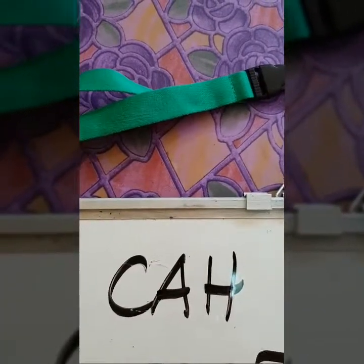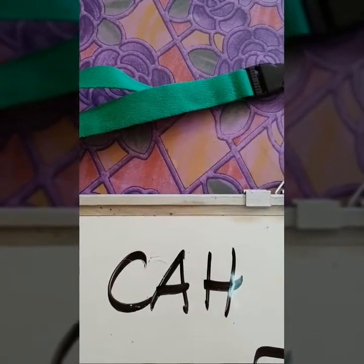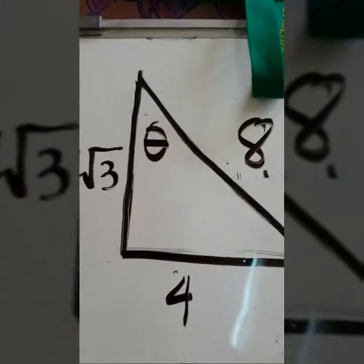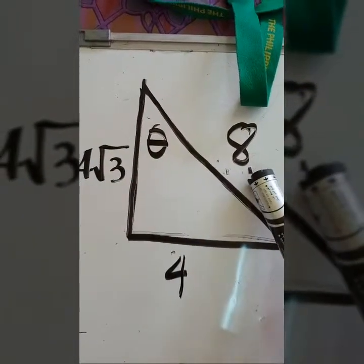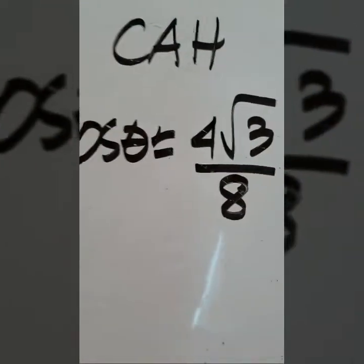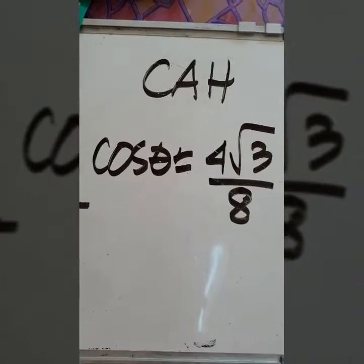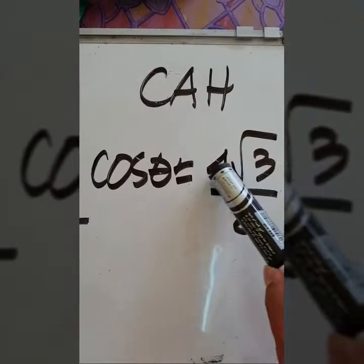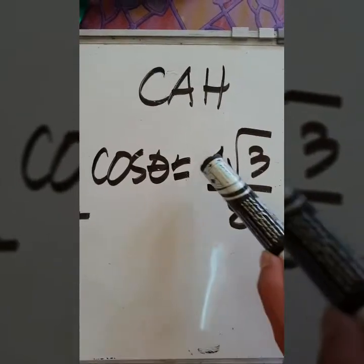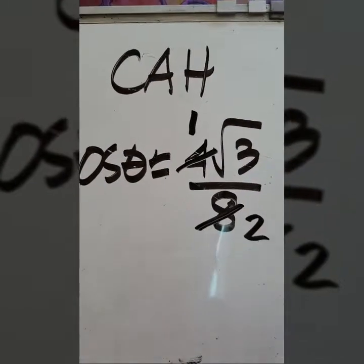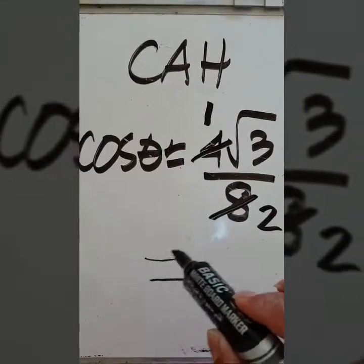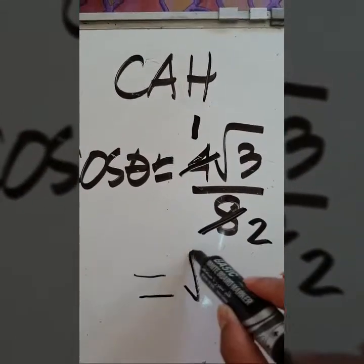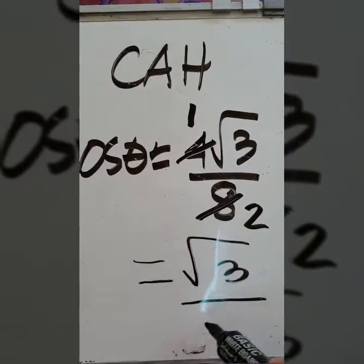Next is cosine. Cosine theta equals adjacent over hypotenuse. The adjacent side is 4 square root of 3 and the hypotenuse is 8. Therefore, cosine theta equals 4 square root of 3 over 8. Since 4 and 8 share a common factor, we can cancel them: 4 becomes 1 and 8 becomes 2. Therefore, our final answer is cosine theta equals square root of 3 over 2.